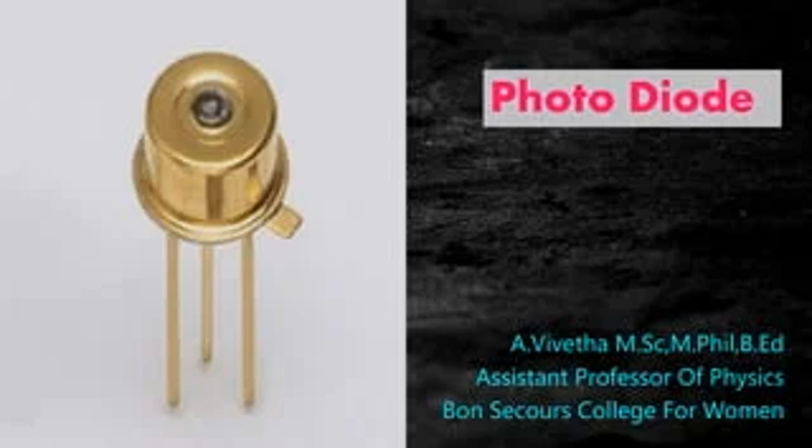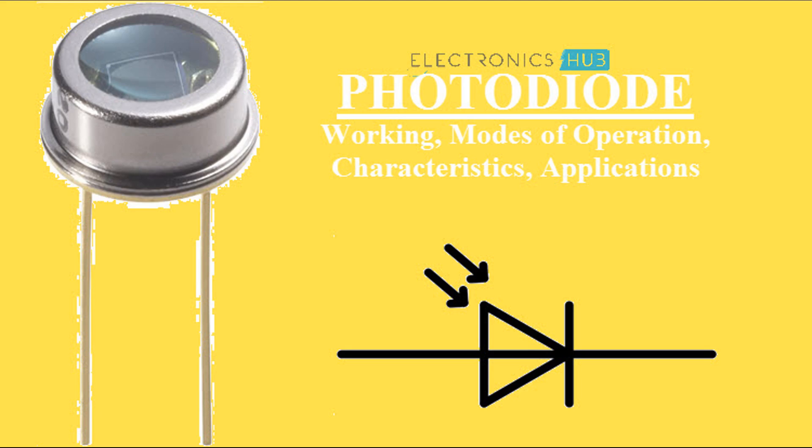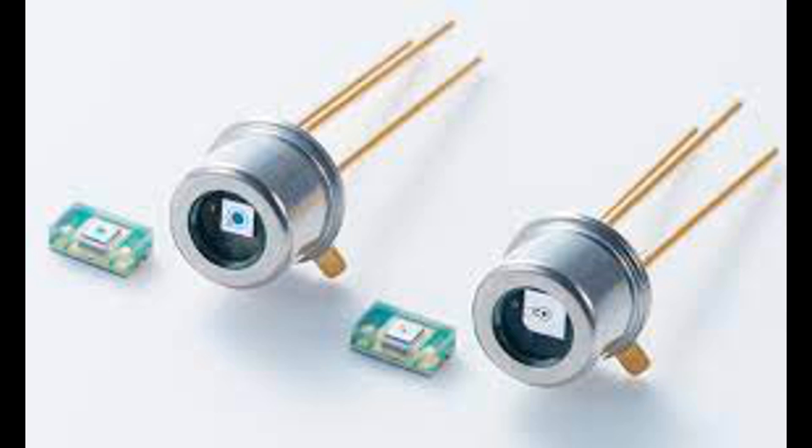Photodiodes work based on the principle of converting light into an electrical current. Basic structure: Photodiodes are made from semiconductor materials like silicon or gallium arsenide. The core of a photodiode is a P-N junction, which is formed by joining P-type and N-type semiconductor materials.